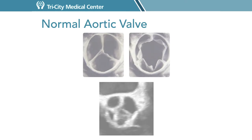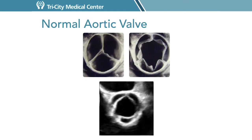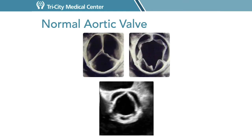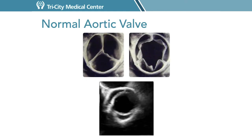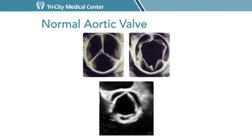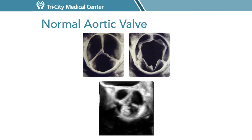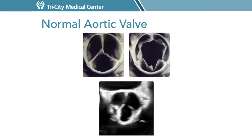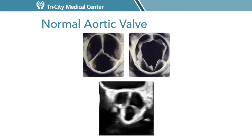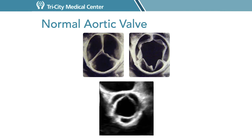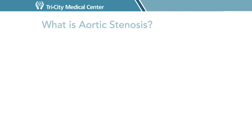What is a normal aortic valve? This is an echocardiogram of a normal aortic valve. A normal aortic valve has three leaflets, and the two most common conditions that can affect it are aortic stenosis and aortic regurgitation.